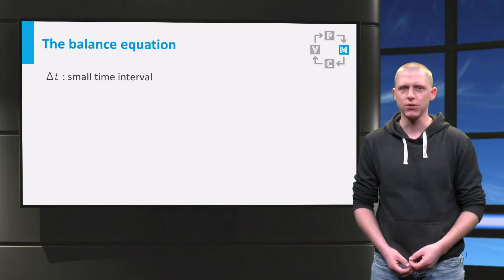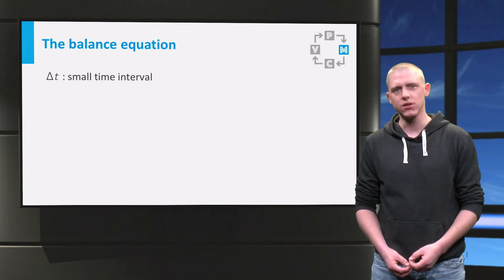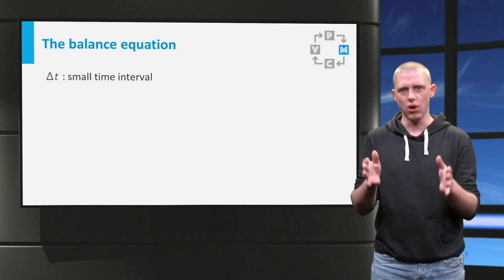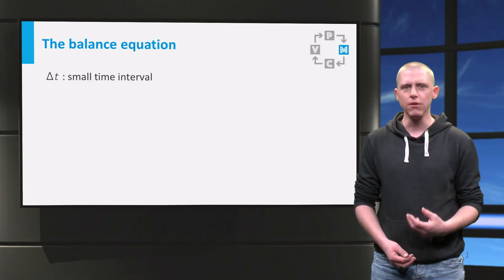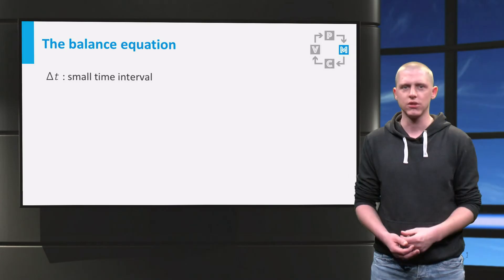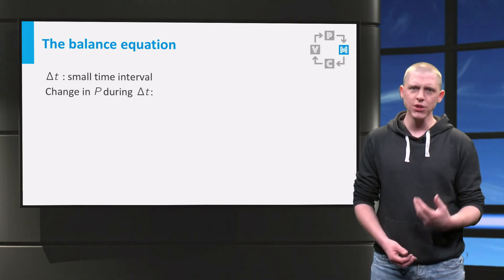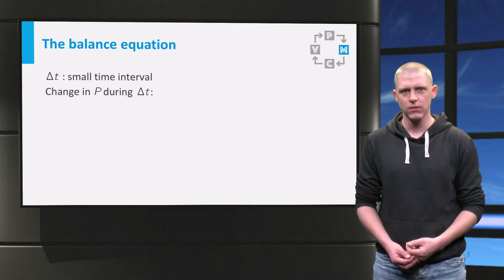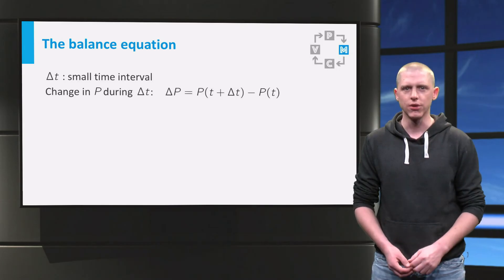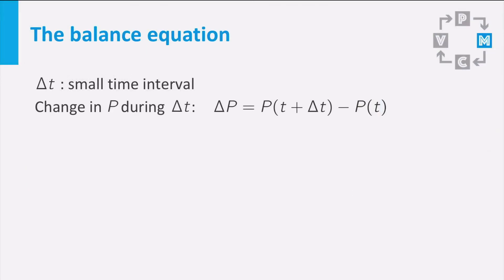Consider a small time interval delta t. Think of delta t as a couple of days, or one day, or half a day. In the end we are going to use an infinitely small time interval delta t. How is P going to change during the interval delta t? Denote the change of P during the interval delta t by the symbol delta P. Delta P is the difference between P at time t plus delta t minus P at time t.